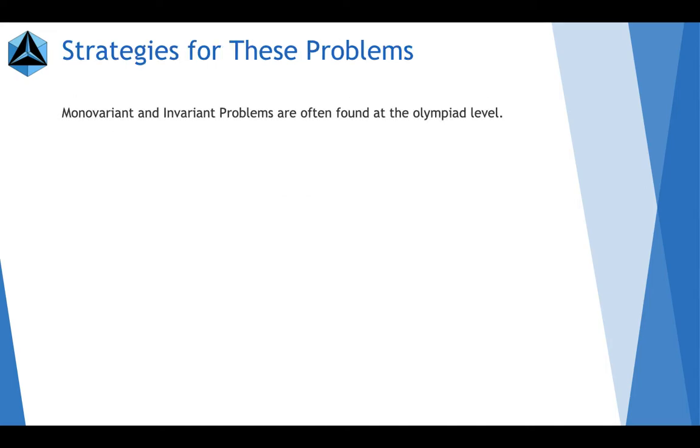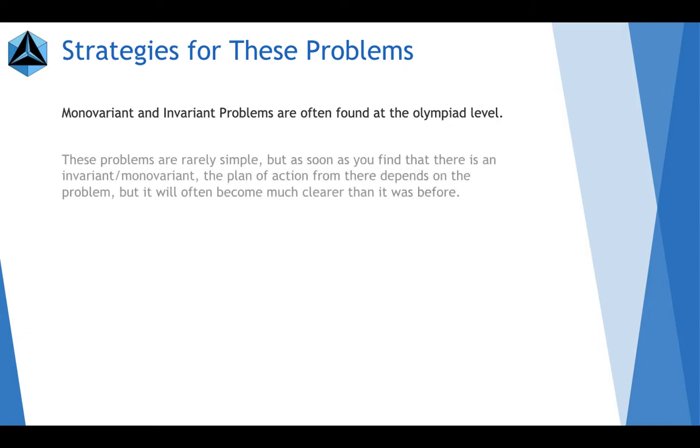So, monovariant and invariant problems are often found at the Olympiad level. In the scheme of this lecture, we're going to try to keep it simple, but not too simple. There's going to be a couple of difficult problems here and there, but they're all going to be doable. They're rarely simple. As soon as you find that there is an invariant and monovariant, however, the plan of action from there depends on the problem, but it will be much clearer than it was before.